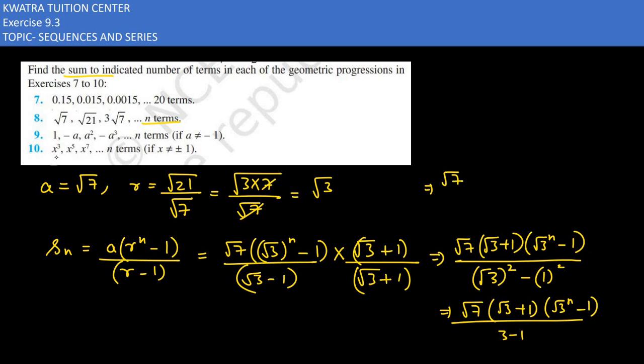Okay, so root 7 would be there, root 3 plus 1 would be there, and root 3 n minus 1 would be there, divided by root 2. So that would be your answer for the 8th part.